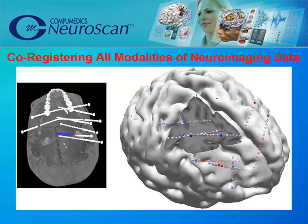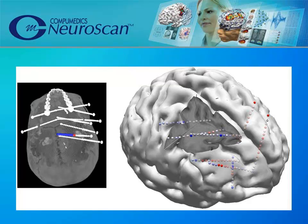CURRY merges these different datasets together, as well as PET, fMRI, SPECT, DTI, and other datasets. For example, depth electrodes from the CT can be displayed with the MRI data. The different colors on the grid electrodes display positive and negative voltages. Of course, the EEG waveforms can be displayed as well.